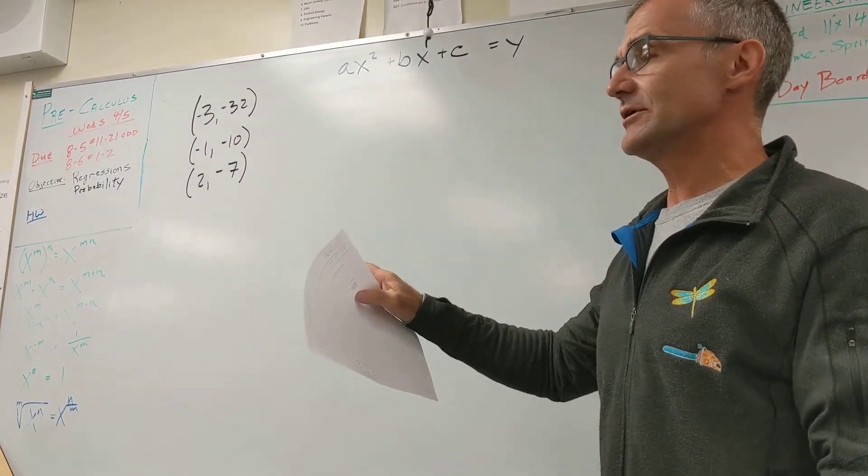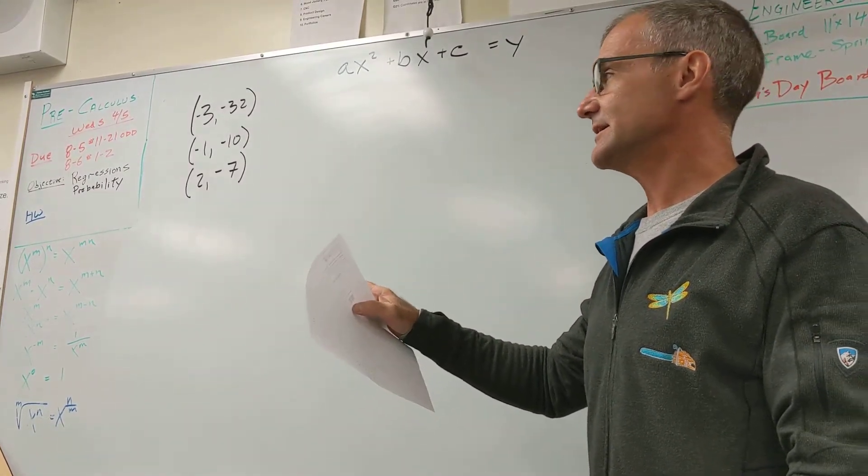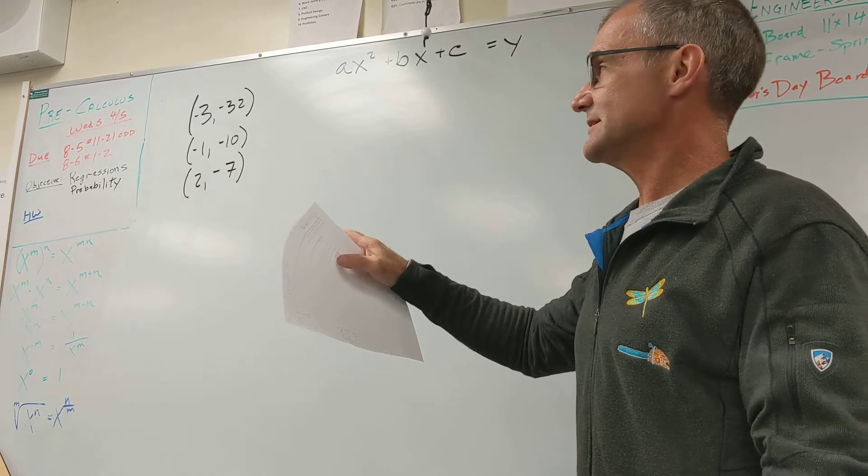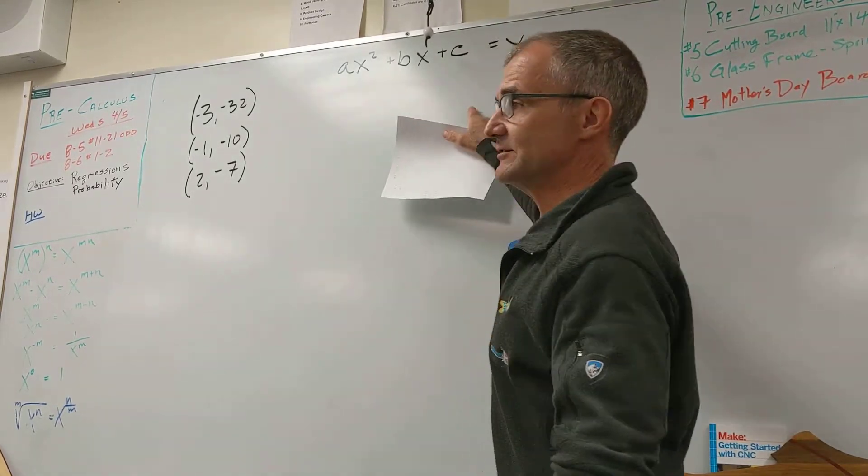Okay, so number 34, essential learning outcome, is given three points find the equation of a quadratic.